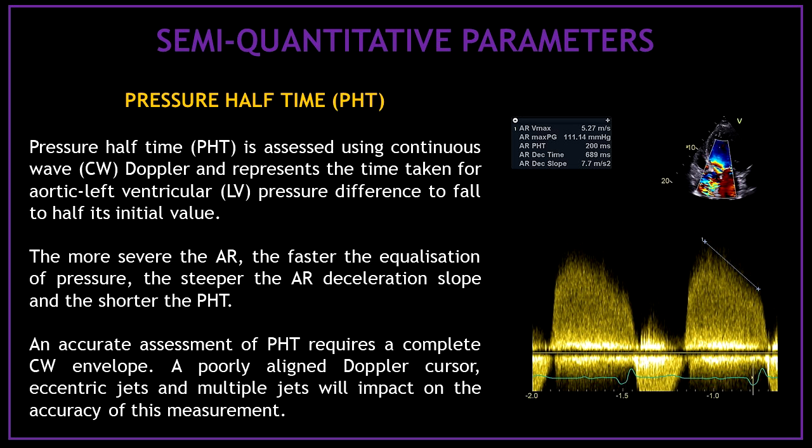The next semi-quantitative parameter is the pressure half time, or PHT. Pressure half time is assessed using continuous wave Doppler and represents the time taken for the aortic-left ventricular pressure difference to fall to half its initial value. The more severe the aortic regurgitation, the faster the equalization of pressure, the steeper the deceleration slope, and the shorter the pressure half time. An accurate assessment requires a complete continuous wave envelope. A poorly aligned Doppler cursor, eccentric jets, and multiple jets will impact accuracy.